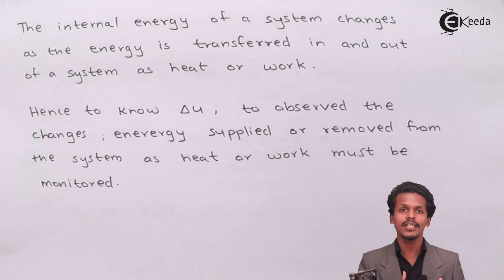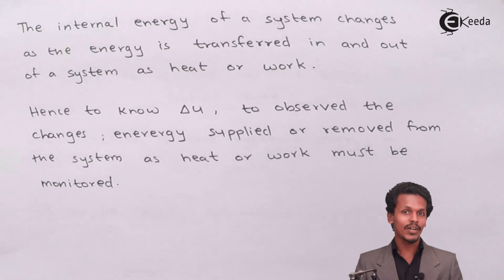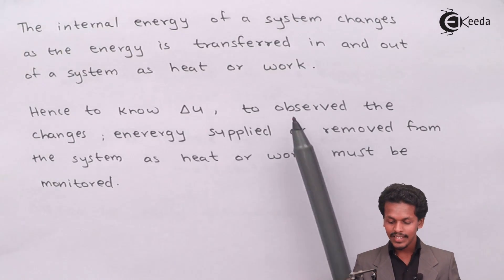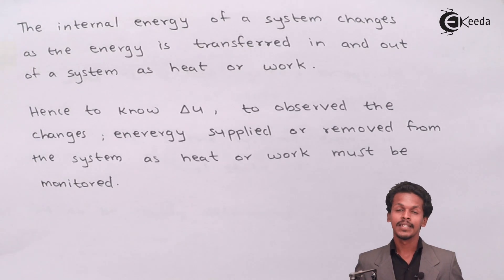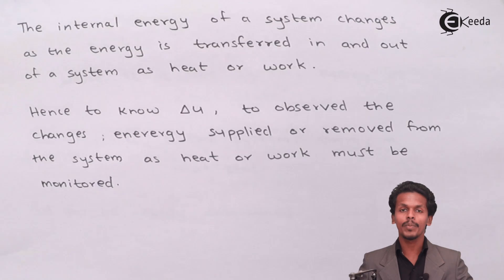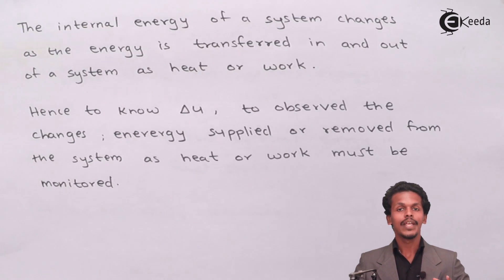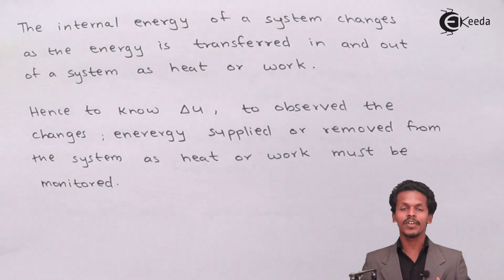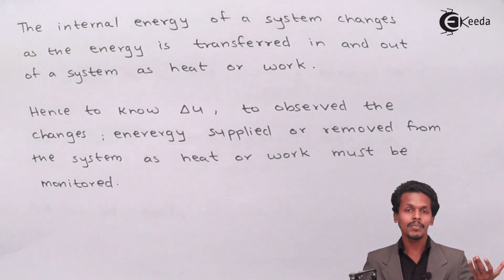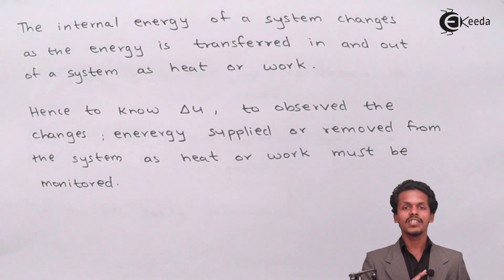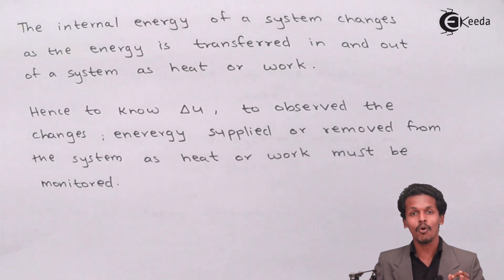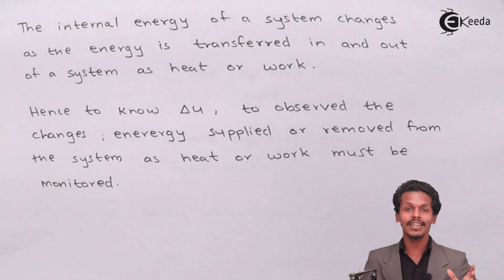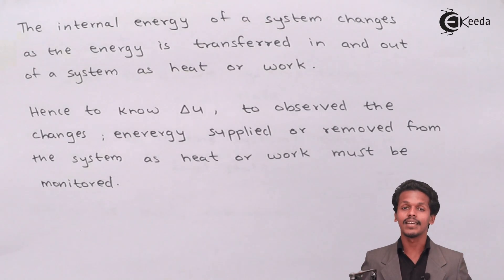So to observe the changes and determine delta U, the energy supplied to or removed from the system as heat or work must be monitored. We should observe the initial state, then after providing heat or performing work — or after removing heat or work done by the system — we can calculate what changes occurred between the initial and final states. This is how we calculate the change in internal energy, even though we cannot calculate the absolute internal energy of the system.